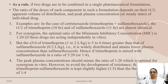Some rules of fixed dose combinations: if two drugs are combined in a single pharmaceutical formulation, the ratio of the doses of each component depends on the plasma half-life, apparent volume of distribution, and peak plasma concentration of each drug, which should be similar. For example, in the case of cotrimoxazole, it is the combination of trimethoprim and sulfamethoxazole.